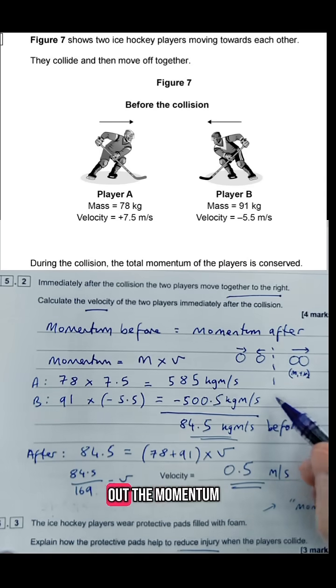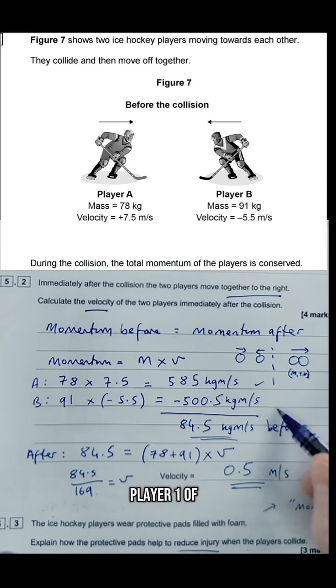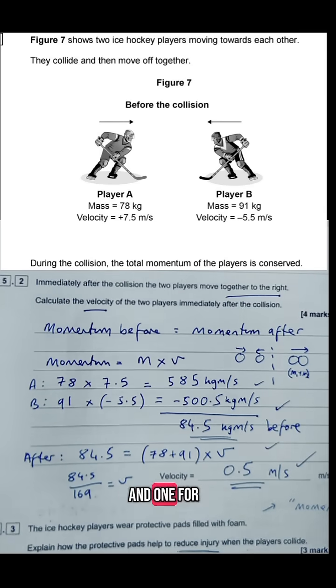So that's four marks. One for working out the momentum of player one, one for momentum of player two, then the final calculation and one for the final answer.